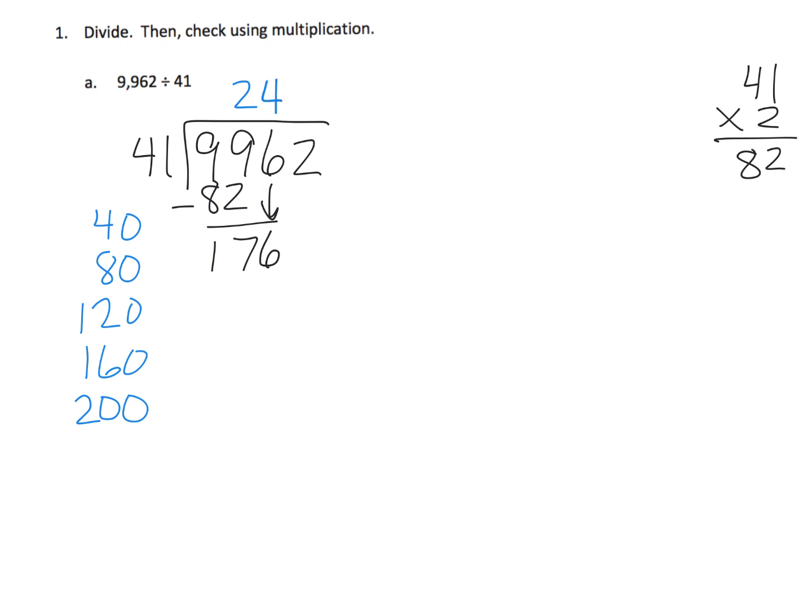So I'm going to think my estimation is 4. So I'm going to go over here on scratch paper and I'm going to do 41 times 4, and I get 164. And so that's what I'm going to put right here, 164. And I'm going to subtract, and when I subtract I get 12. And again, 12 is less than 41, so I'm golden.